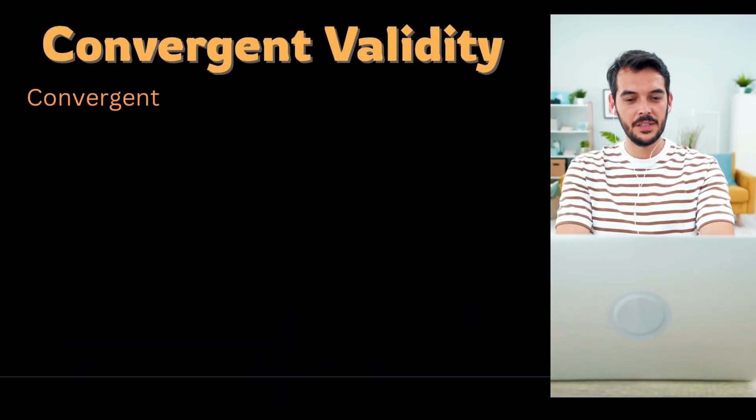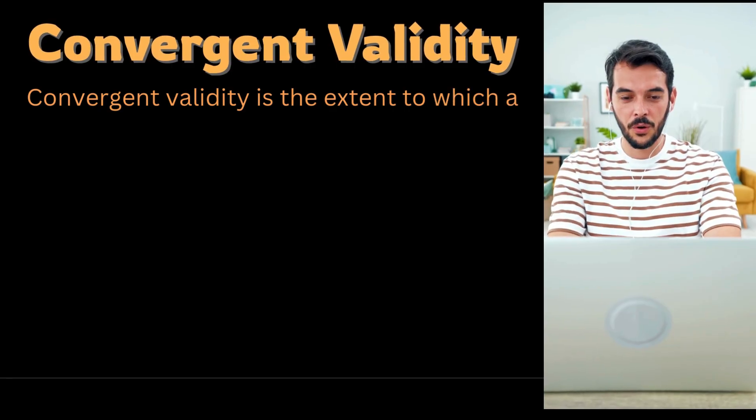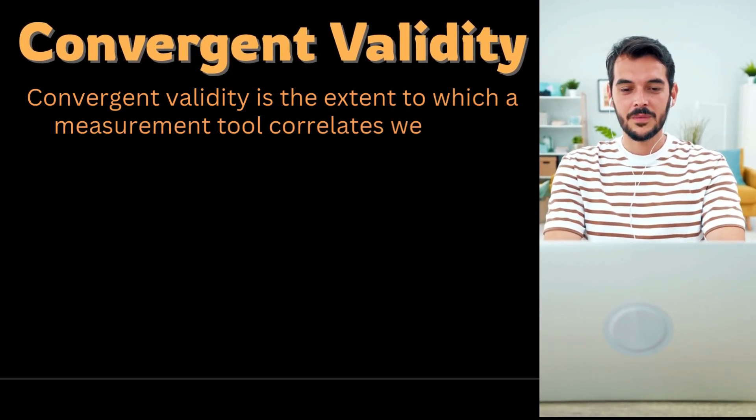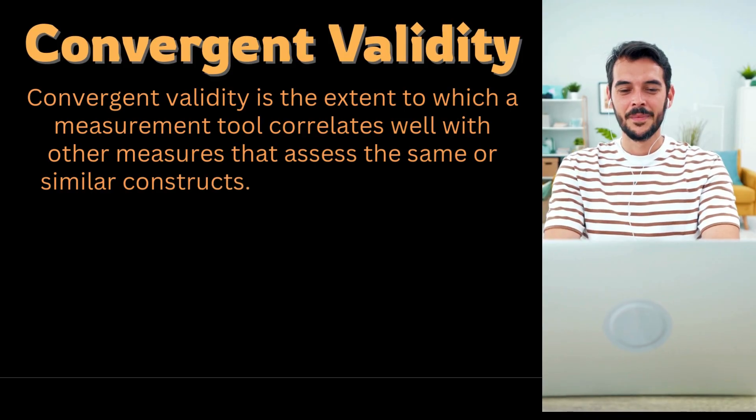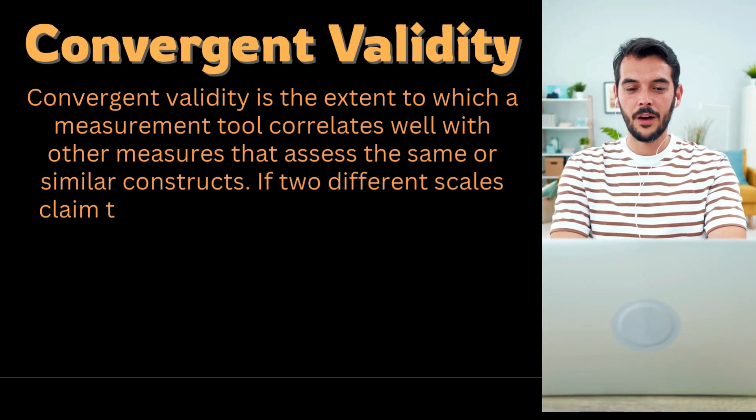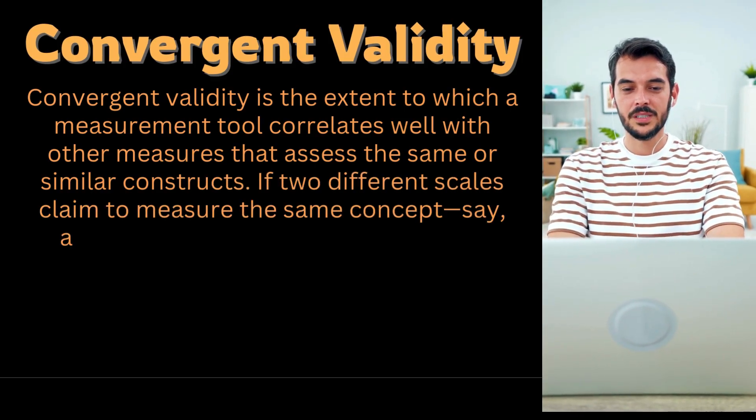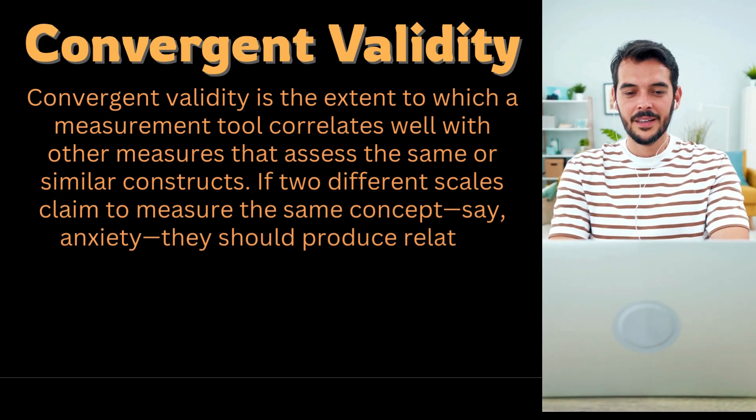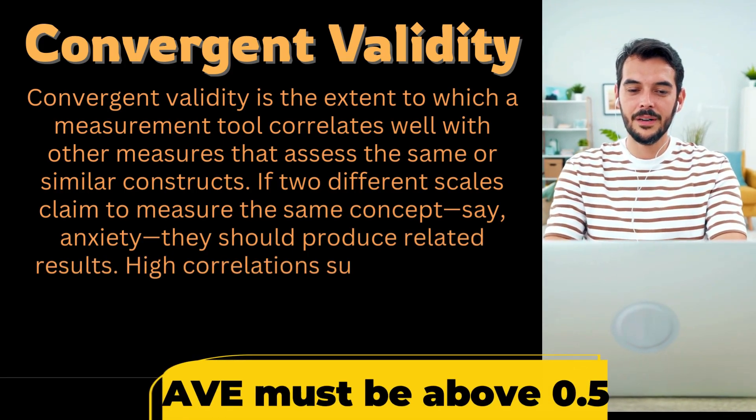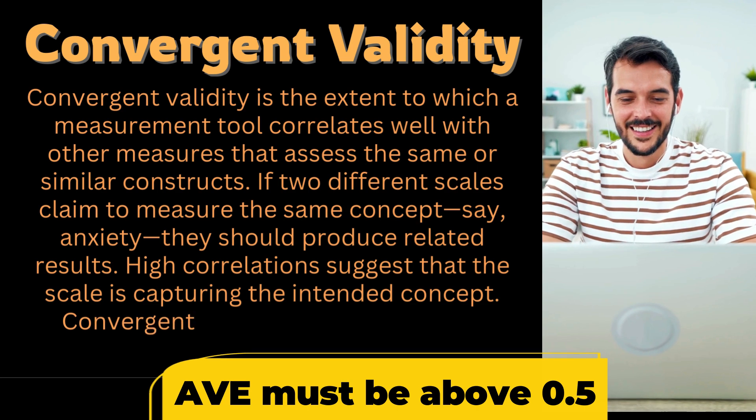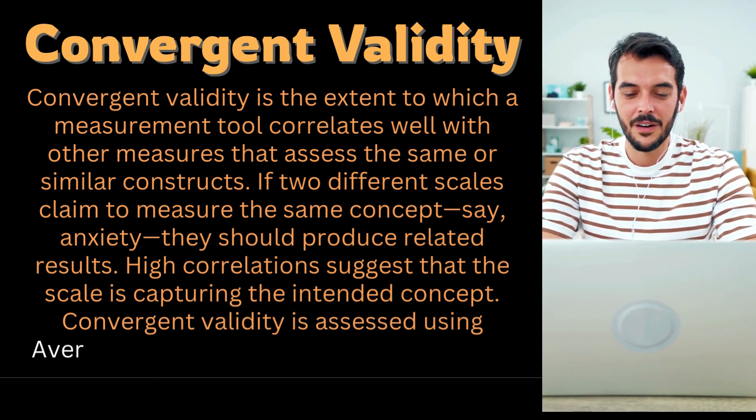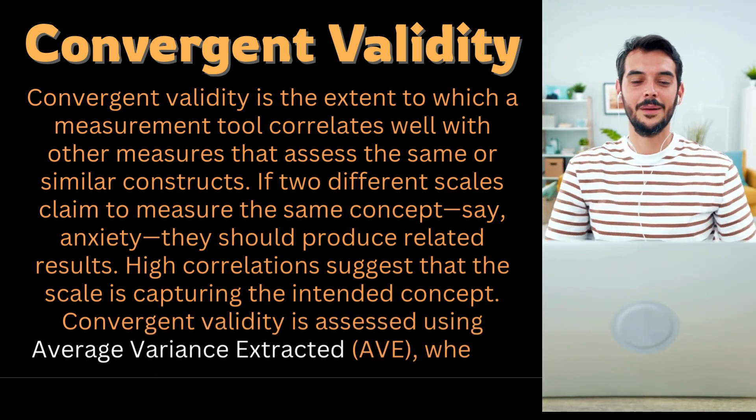Convergent validity is the extent to which a measurement tool correlates well with other measures that assess the same or similar constructs. If two different scales claim to measure the same concept, say anxiety, they should produce related results. High correlations suggest that the scale is capturing the intended concept. Convergent validity is assessed using average variance extracted, where a value above 0.5 is acceptable.